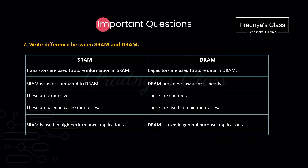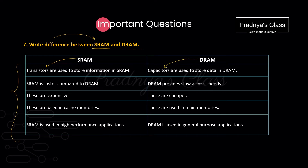The next question: write the difference between SRAM and DRAM — these are two types of RAM. SRAM means static RAM and DRAM means dynamic RAM. Static RAM stores information in transistors, whereas dynamic RAM stores it in capacitors. SRAM is faster compared to DRAM, which is why it is more expensive. DRAM is slower than SRAM, which is why it is cheaper.